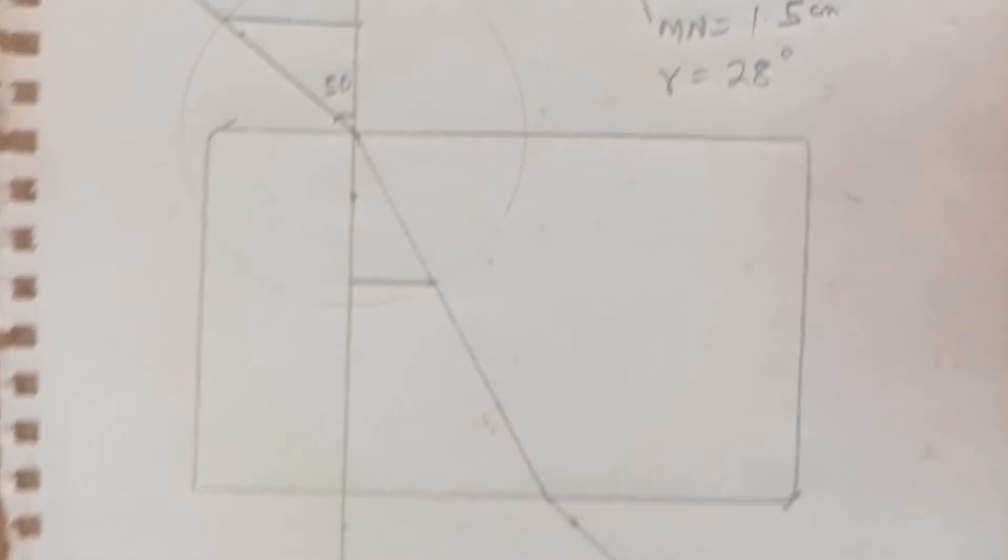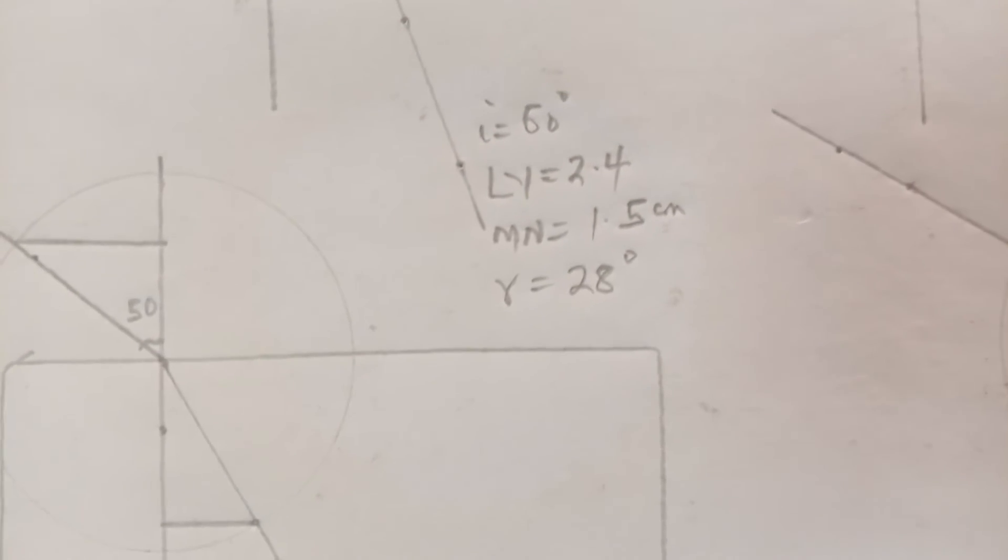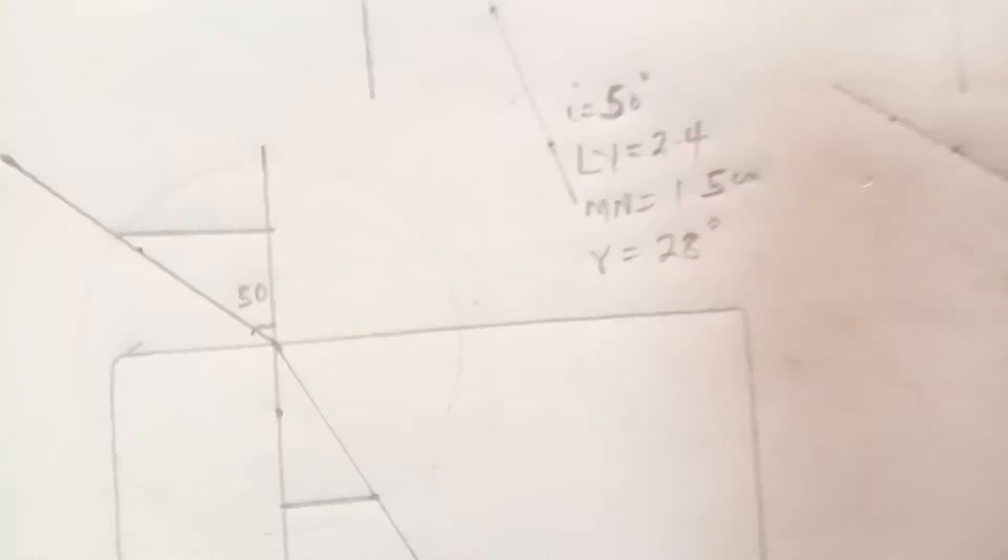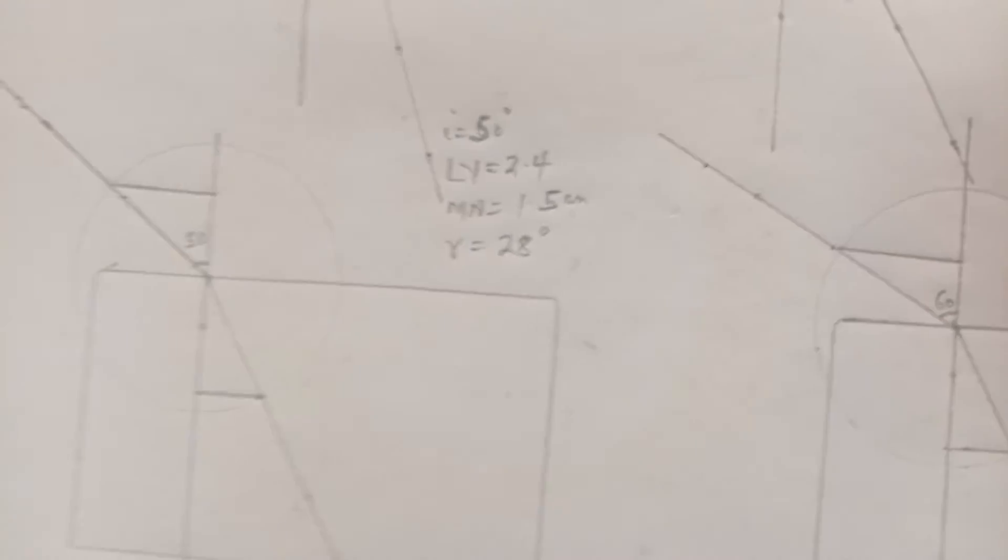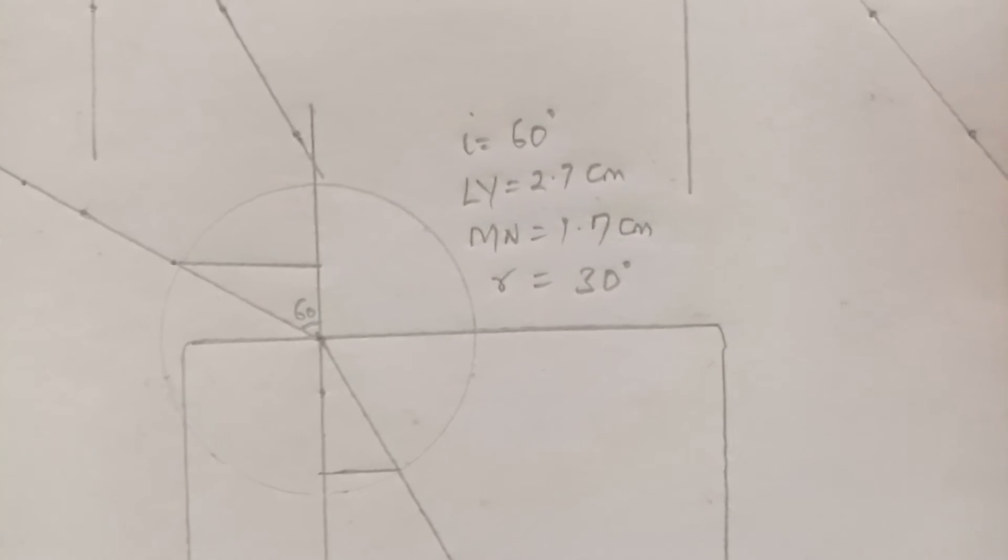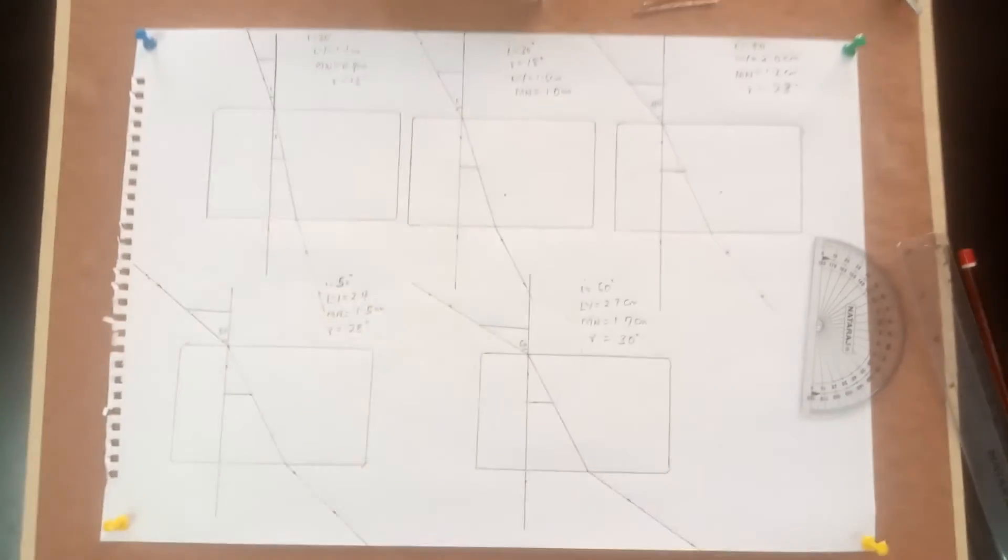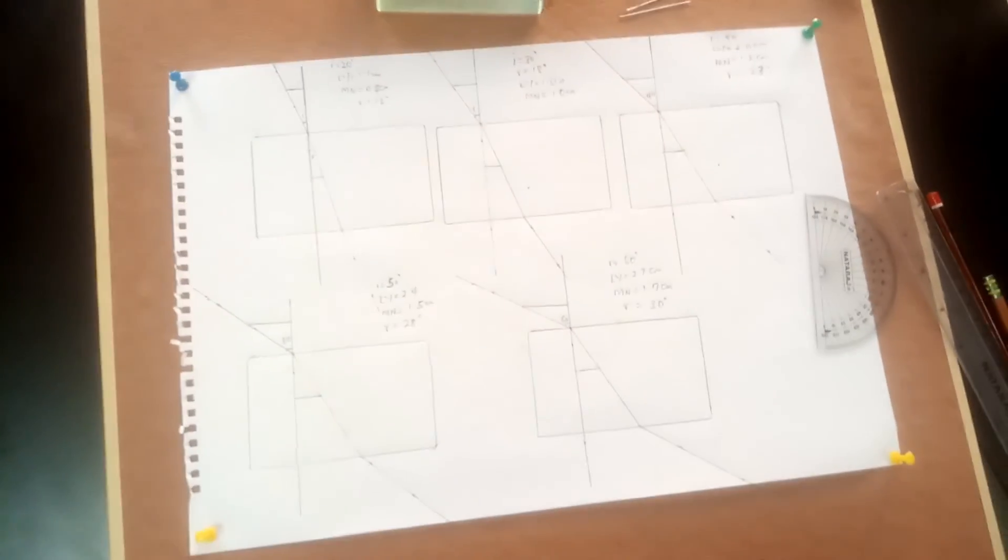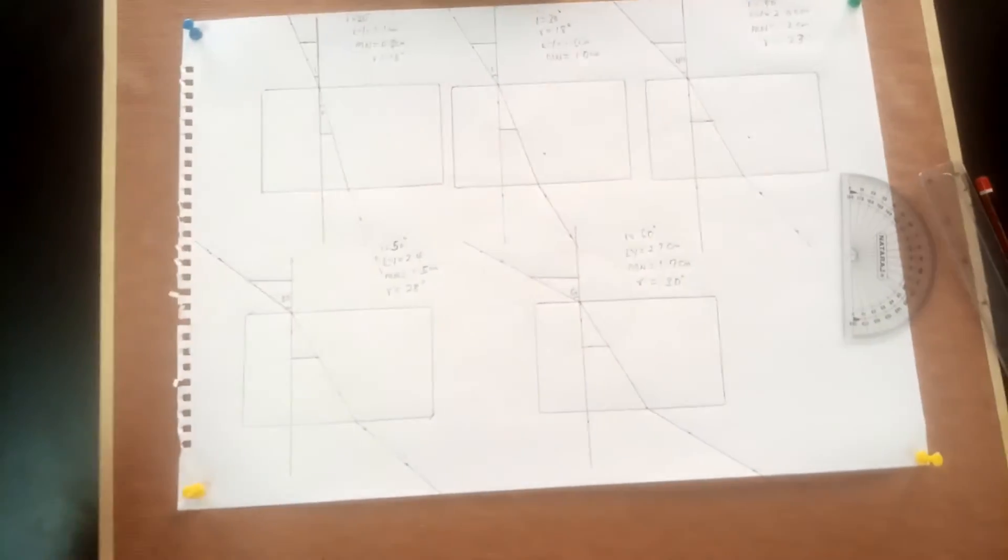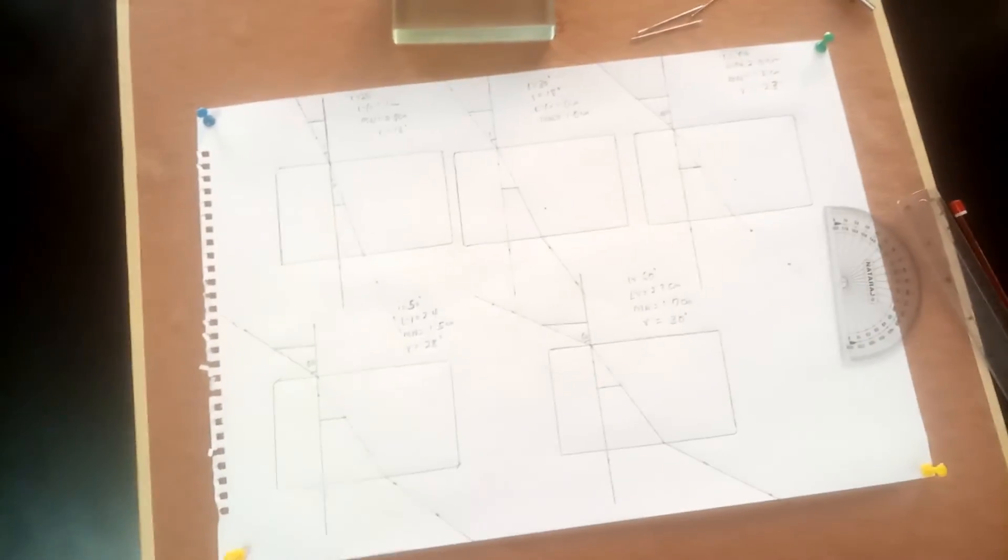So here is the final deduction from what we've done in the experiment. So this is what we've measured. For I=50, LY is equal to 2.4 and MN is equal to 1.5 and R is equal to 28. For I=60, LY is 2.7, MN is equal to 1.7 and R is equal to 30. So this is the complete drawing. So these are the traces that we have been able to do. So I'm going to pile up all this data inside a table and then you'll see the instruction already. I'm going to follow that instruction to plot a graph and deduce my slope.